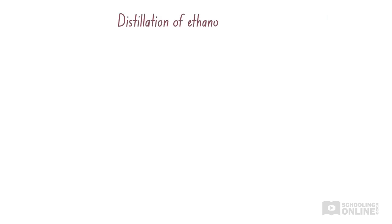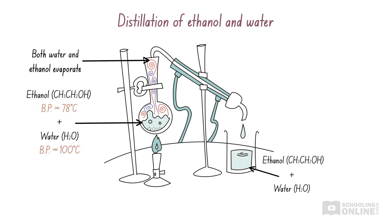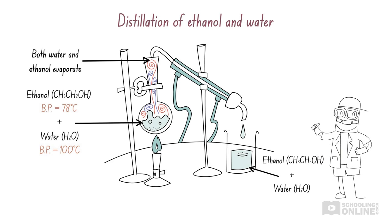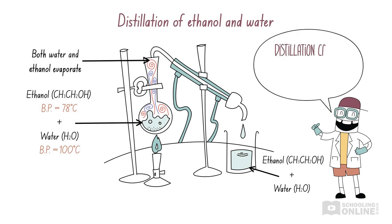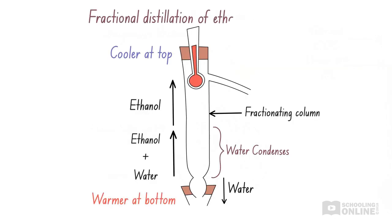Now what will happen if we try to separate ethanol and water by distillation? Well, when we heat the mixture of ethanol and water, both of them will evaporate. Then they will both enter the condenser and turn back into a liquid. We would collect both ethanol and water in the new container — this hasn't helped us at all! We're trying to separate ethanol and water, not transport the entire mixture to a new container. As you can see, distillation cannot separate two substances if they have similar boiling points.